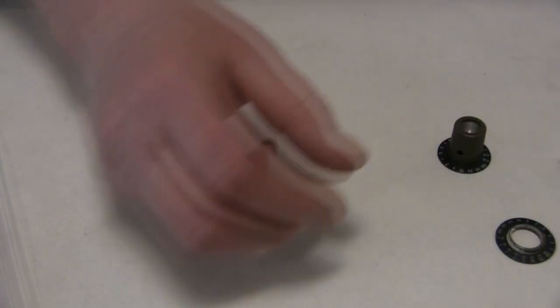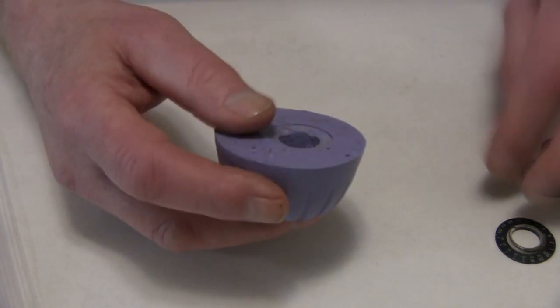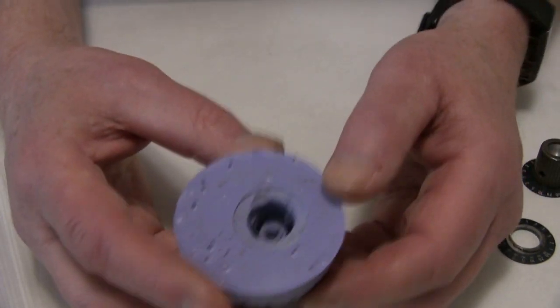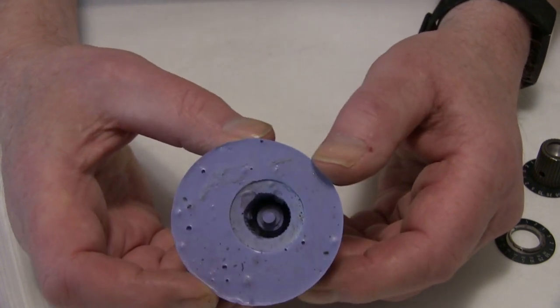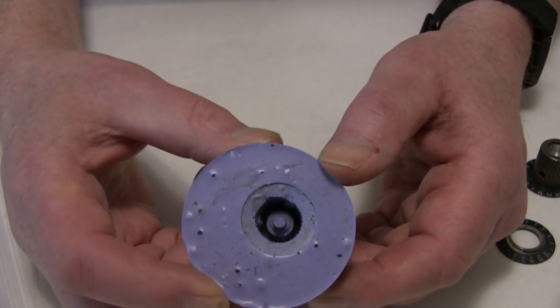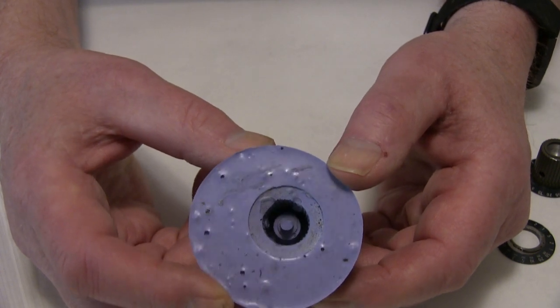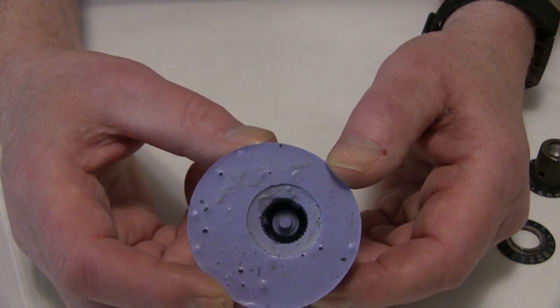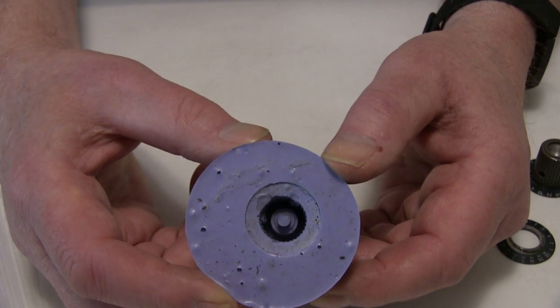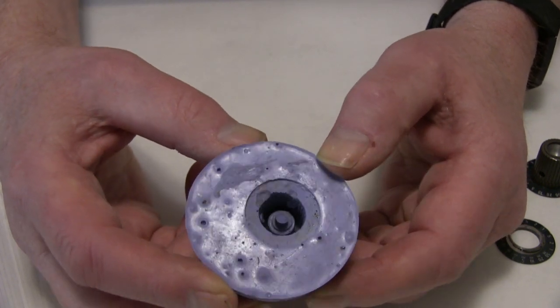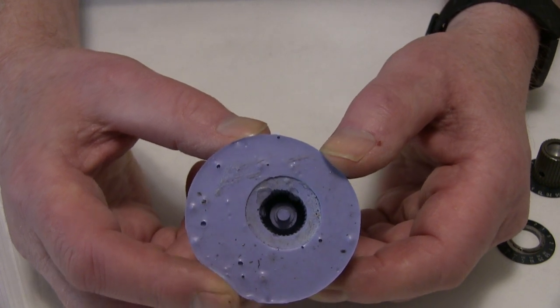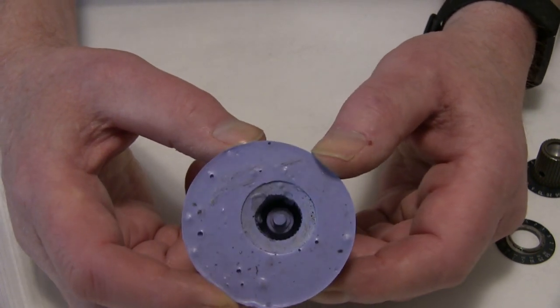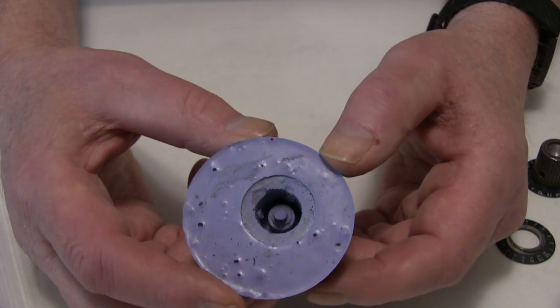A few years ago I had a broken knob on a Tektronix 485 and I made this mold from a good knob. This is made with a two-part silicone rubber molding compound. I'll put some links below as to where you can obtain these parts, this material.